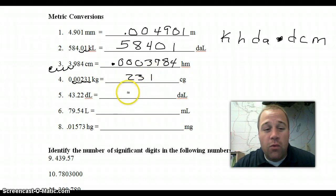Decaliters to decaliters is 2 to the left. So it should be 0.4322. Liters is the dot going to milliliters is 3 to the right. So 79,540. And the last one is hectograms to milligrams which is going to be 5 to the right. So if you move that decimal point 5 to the right you get 1573.